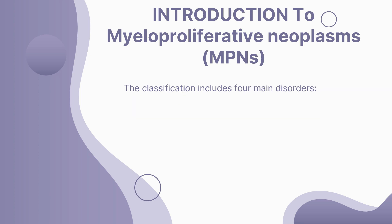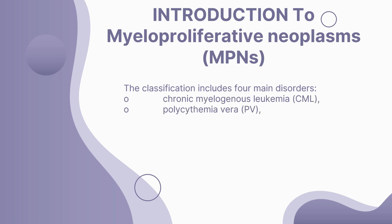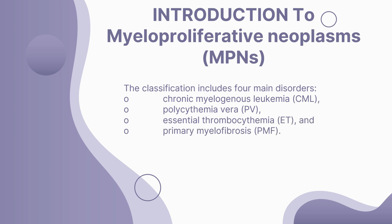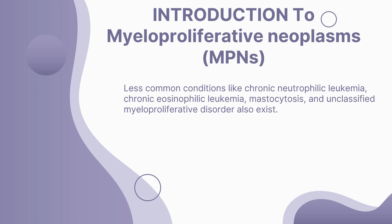The world of MPNs is diverse and includes four main disorders: chronic myelogenous leukemia (CML), polycythemia vera (PV), essential thrombocythemia (ET), and primary myelofibrosis (PMF). There are also less common conditions like chronic neutrophilic leukemia, chronic eosinophilic leukemia, mastocytosis, and unclassified myeloproliferative disorder.